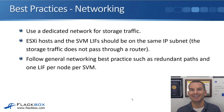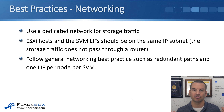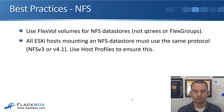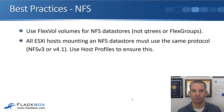For networking, use a dedicated network for storage traffic with no other traffic on that particular network. ESXi hosts and the SVM LIFs on the ONTAP side should be on the same IP subnet so that storage traffic does not pass through a router — it goes directly between the ESXi hosts and the SVM LIFs. Also follow general networking best practices such as redundant paths and one LIF per node per SVM. If you're using NFS as a protocol, use FlexVol volumes for the NFS datastores, not Qtrees or FlexGroups. All ESXi hosts mounting an NFS datastore must use the same protocol — NFS version 3 or version 4.1. If you have hosts using different protocols connecting into the same datastore, it can corrupt the datastore, so make sure that does not happen. You can use host profiles in VMware to ensure that.